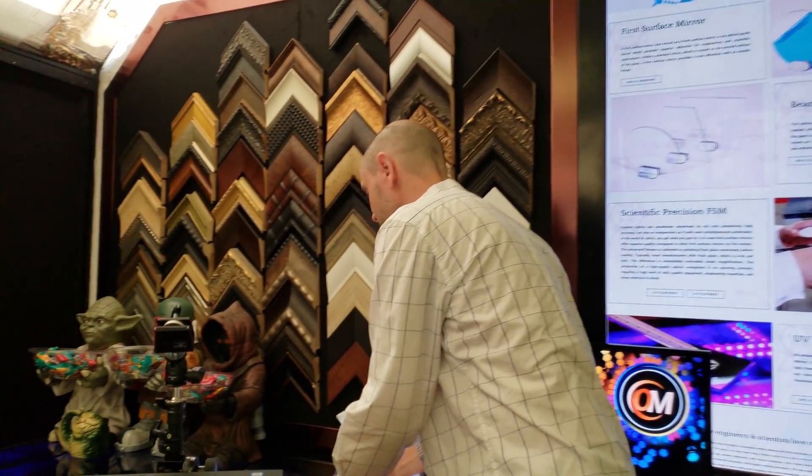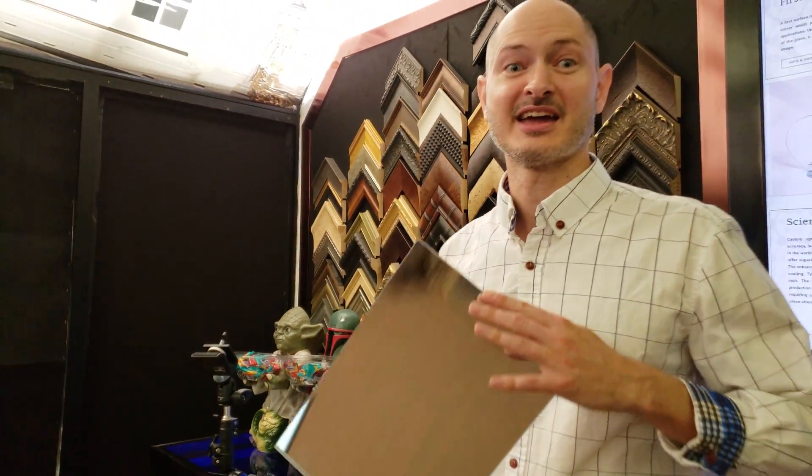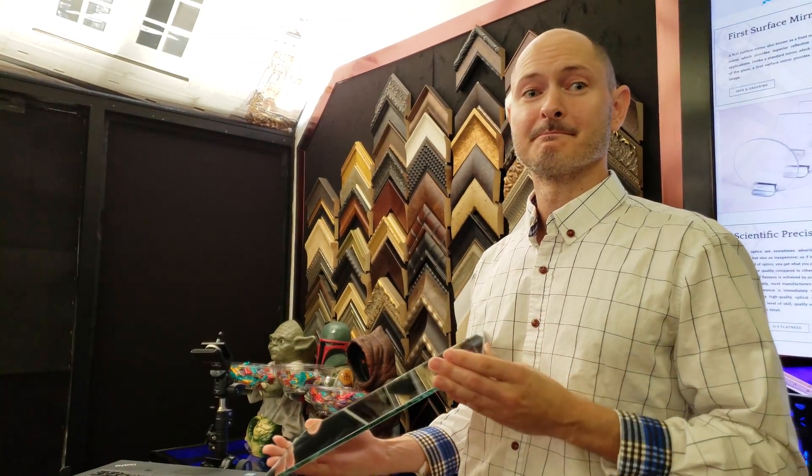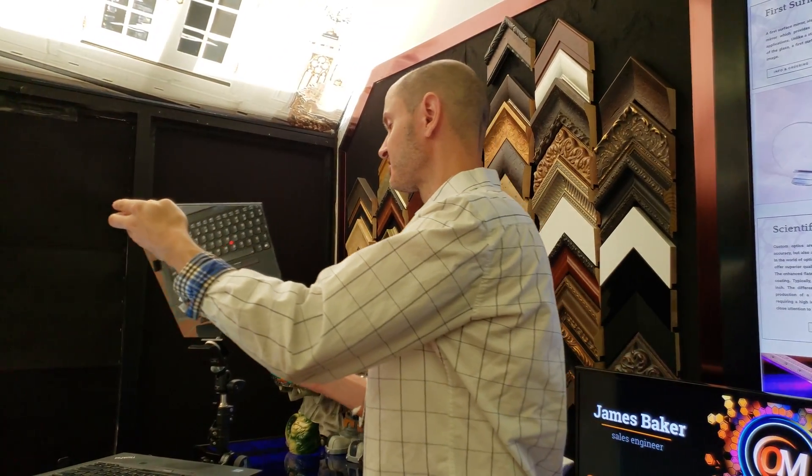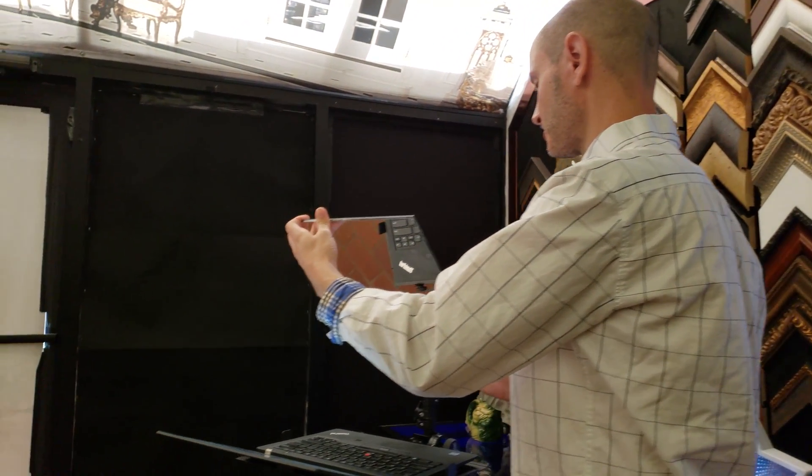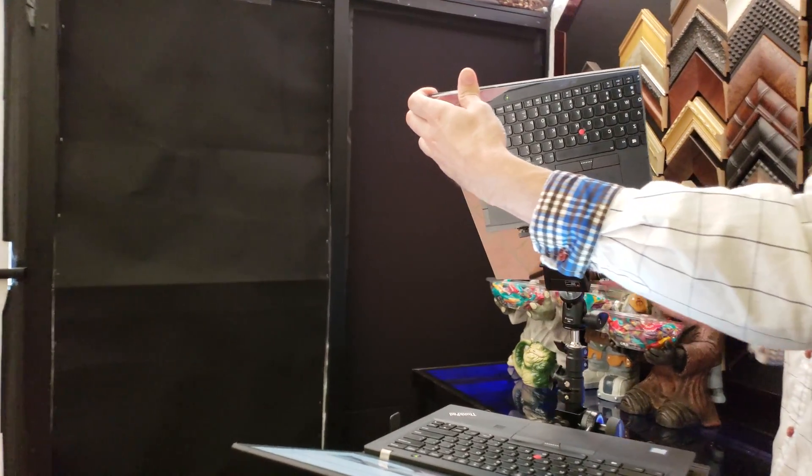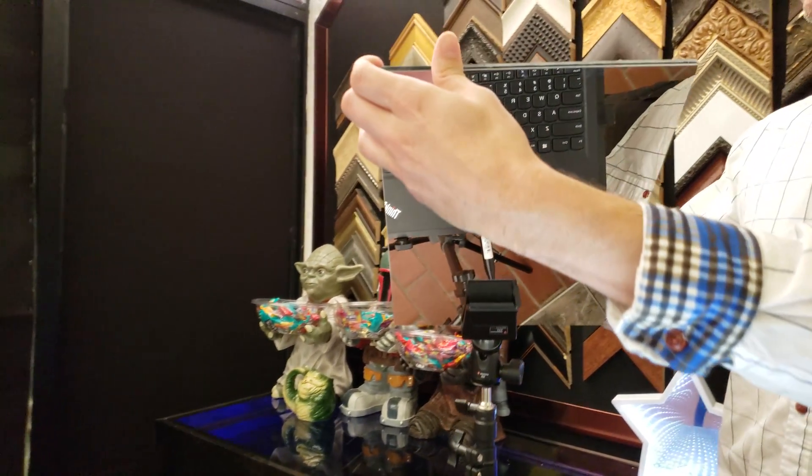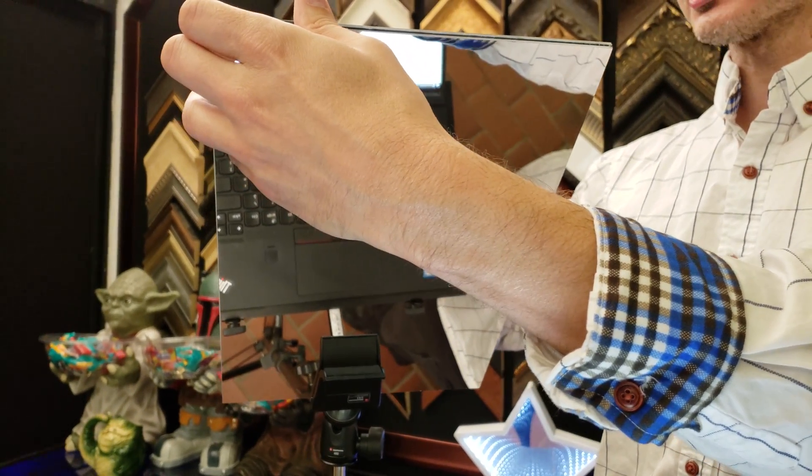The first way you can do it is with a regular mirror, but even better, a front surface mirror so you don't get that ghosting distortion. In other words, a double image. Clamping that in there, you can see what it looks like.